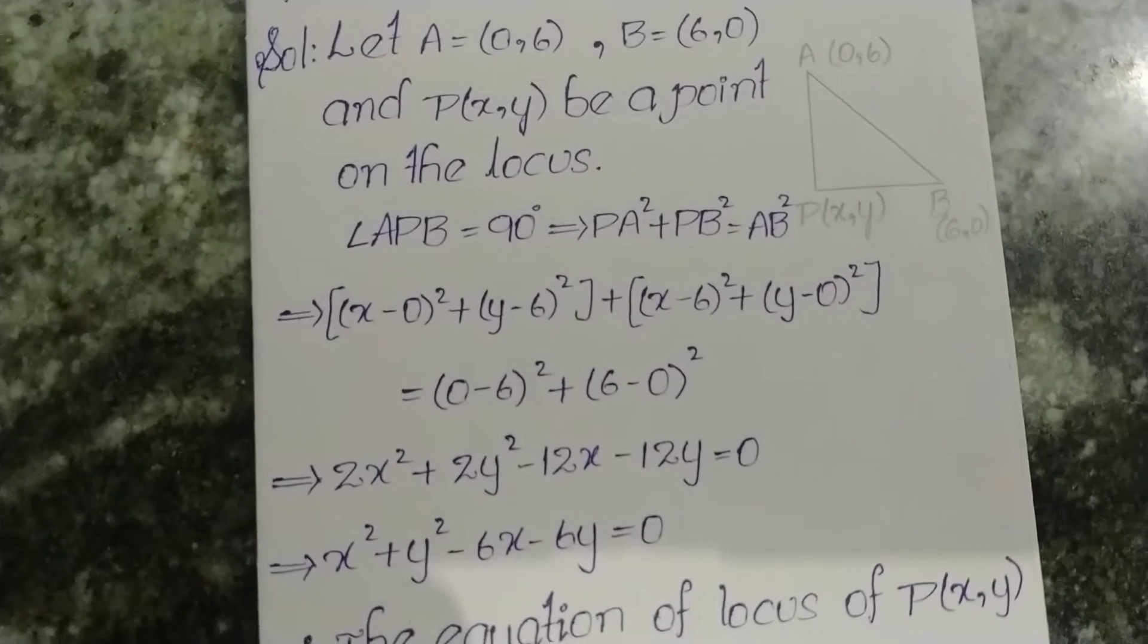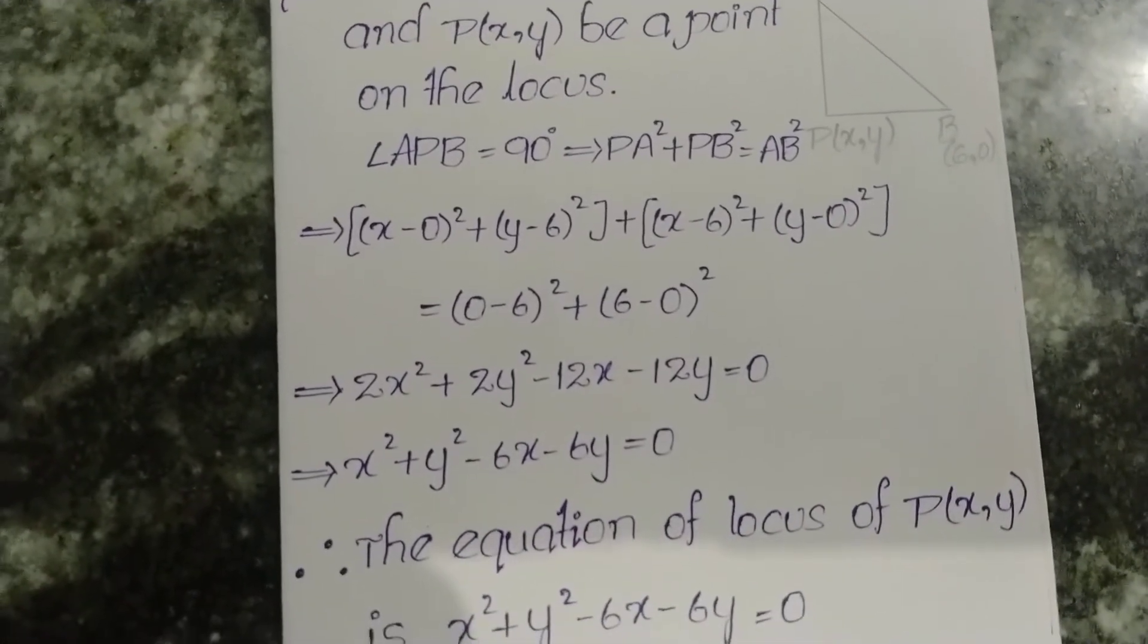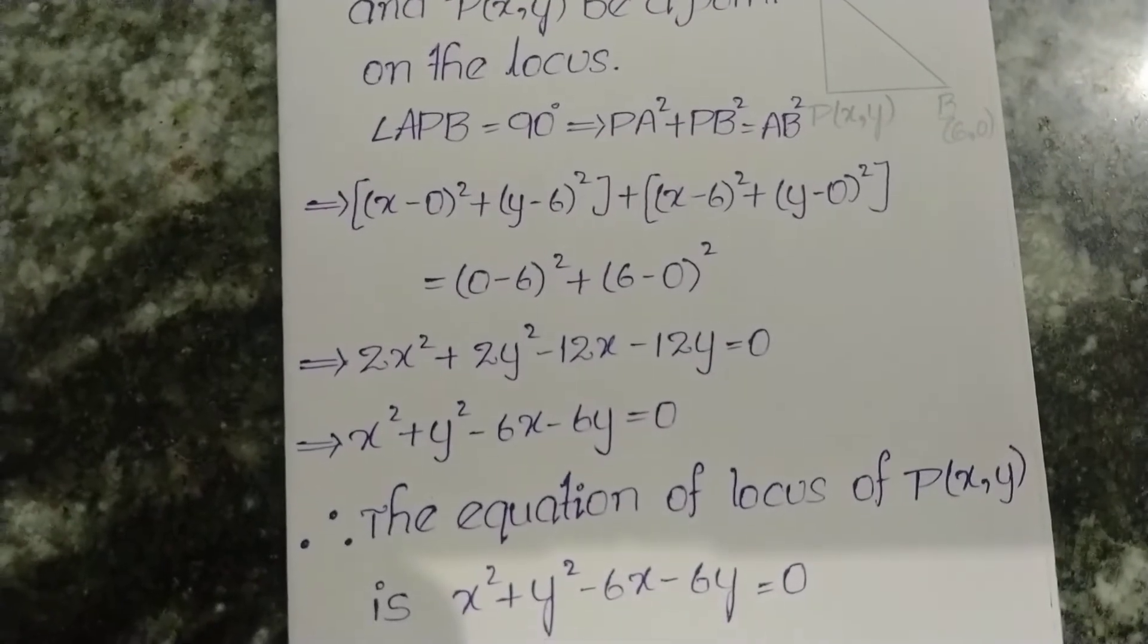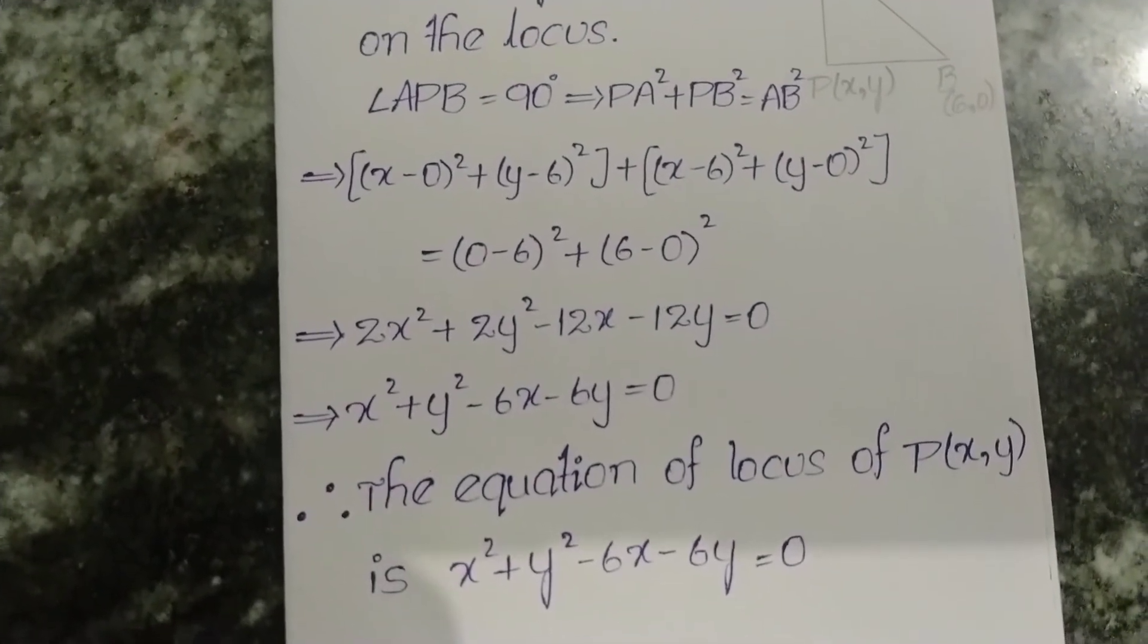Now this equation simplifies to 2x² + 2y² - 12x - 12y = 0, and x² + y² - 6x - 6y = 0.